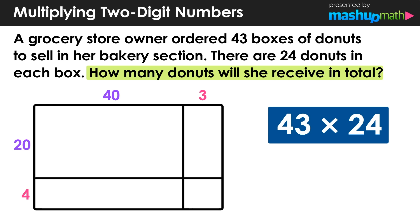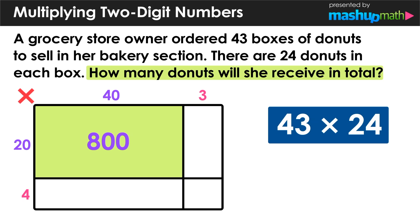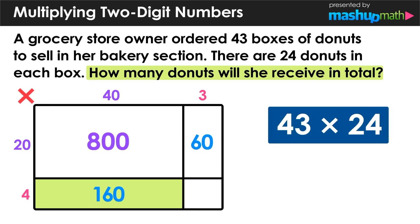Now we can find the value of each section of the area model by multiplying corresponding rows and columns. First, the product of 20 and 40, which equals 800. Then the product of 20 and 3, which equals 60. Next, the product of 40 and 4, which equals 160. And finally, the product of 4 and 3, which equals 12.